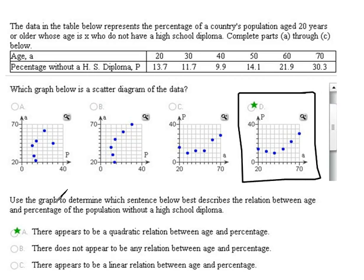Now it says, use the graph to determine which sentence below best describes the relation between age and percentage of the population without high school diploma. So we're trying to figure out what kind of a relationship that we're looking at here. Is it linear? Is it quadratic? Is there nothing going on?